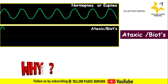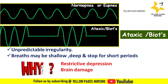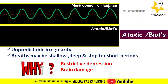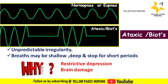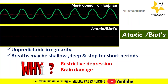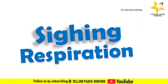Next comes ataxic or Biot's breathing. Ataxic breathing is characterized by unpredictable irregularity — breaths may be shallow or deep and stop for short periods, as shown in the graphical image. Causes include respiratory depression and brain damage, typically at the medullary level.